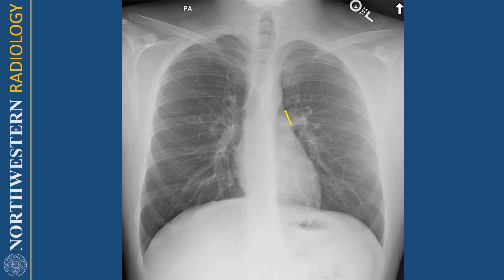Just below the aortic arch is the pulmonary artery — this is the pulmonary artery contour, a sort of straight line just next to the left hilum. If this is the pulmonary artery and this is the aortic arch, then that little divot here is the aortopulmonary window, or AP window for short. It should normally be a little concave divot in the contour of the mediastinum. If you start to see it bulging out, that can be a sign of enlarged lymph nodes.